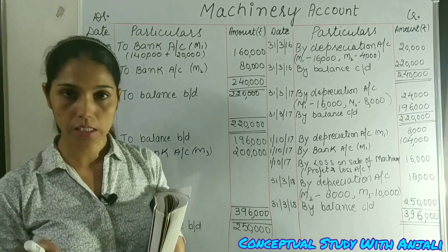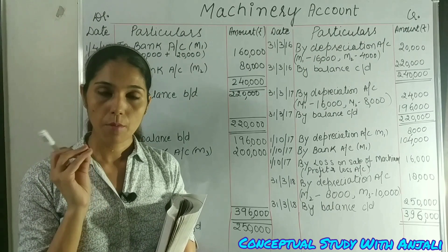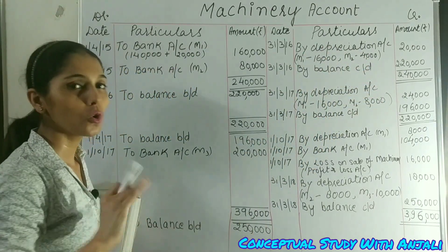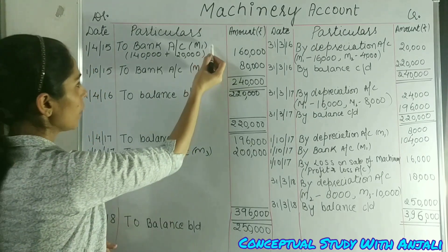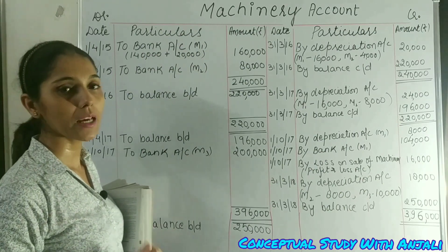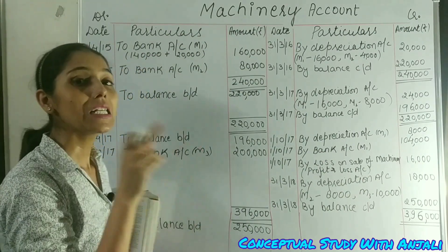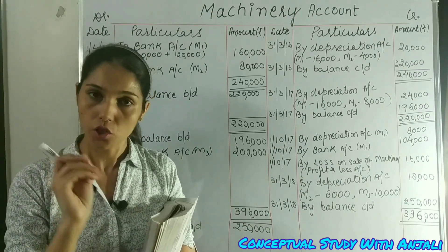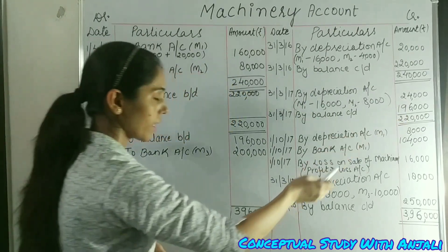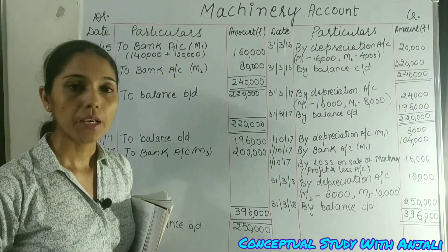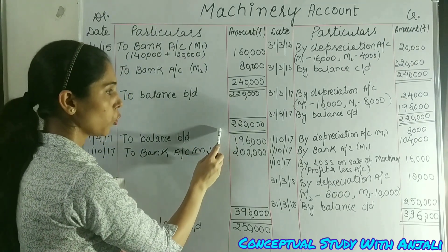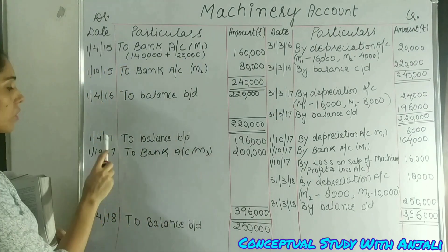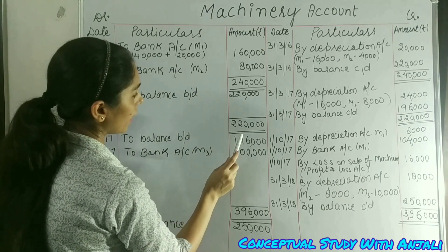In the year ending 31st March 2017, no machinery was purchased or sold, so we only calculate depreciation. By depreciation account: Machine 1 = Rs. 16,000, Machine 2 = Rs. 8,000, total depreciation = Rs. 24,000. Balance carried down on 31st March 2017 is Rs. 1,96,000, and balance brought down on 1st April 2017 is Rs. 1,96,000.